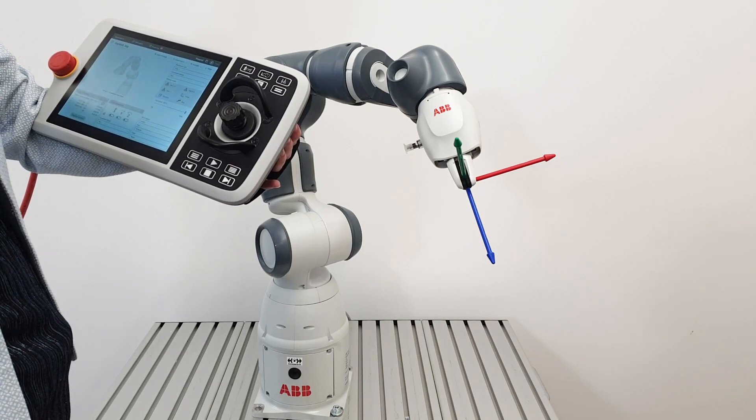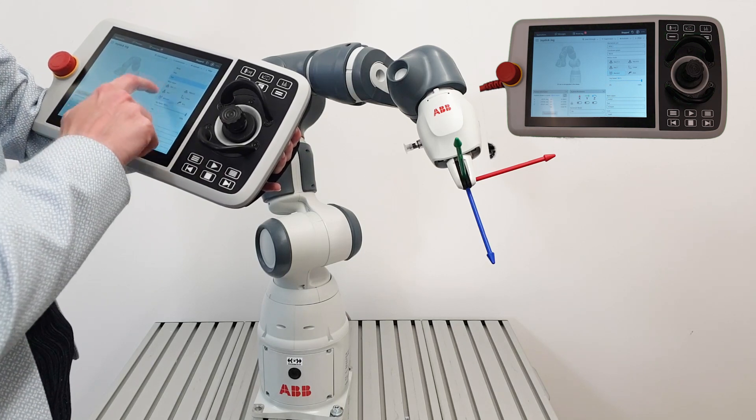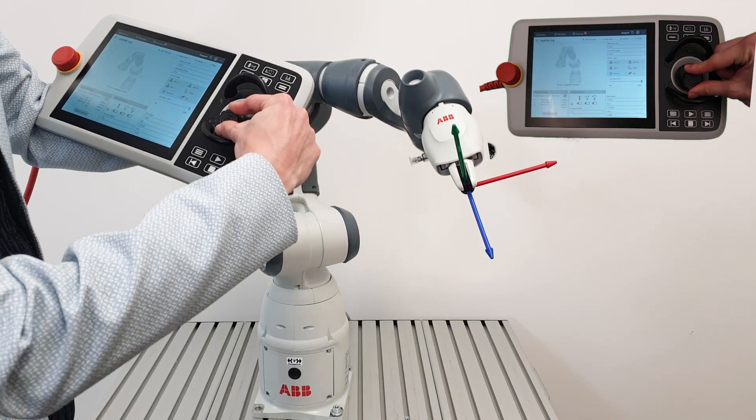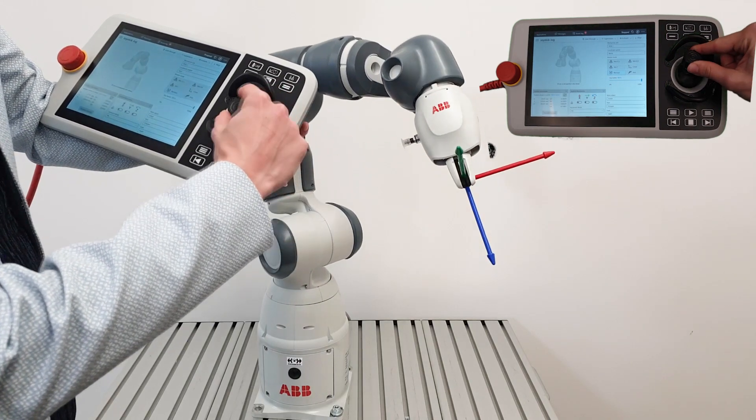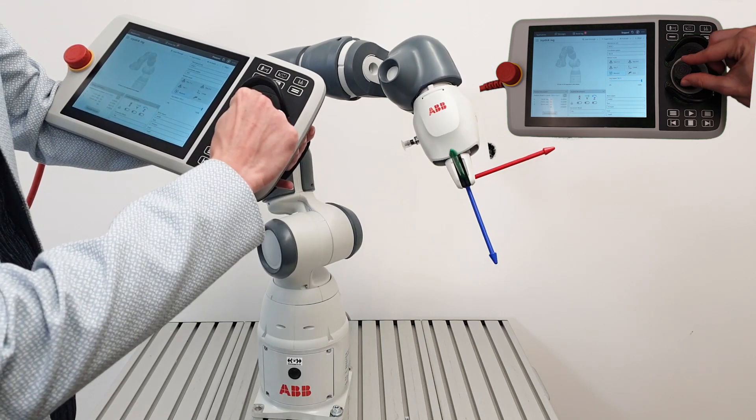Another way to move your single arm Yumi is reorient. You select reorient, coordinate system 2, move it around X axis, Y, and Z.